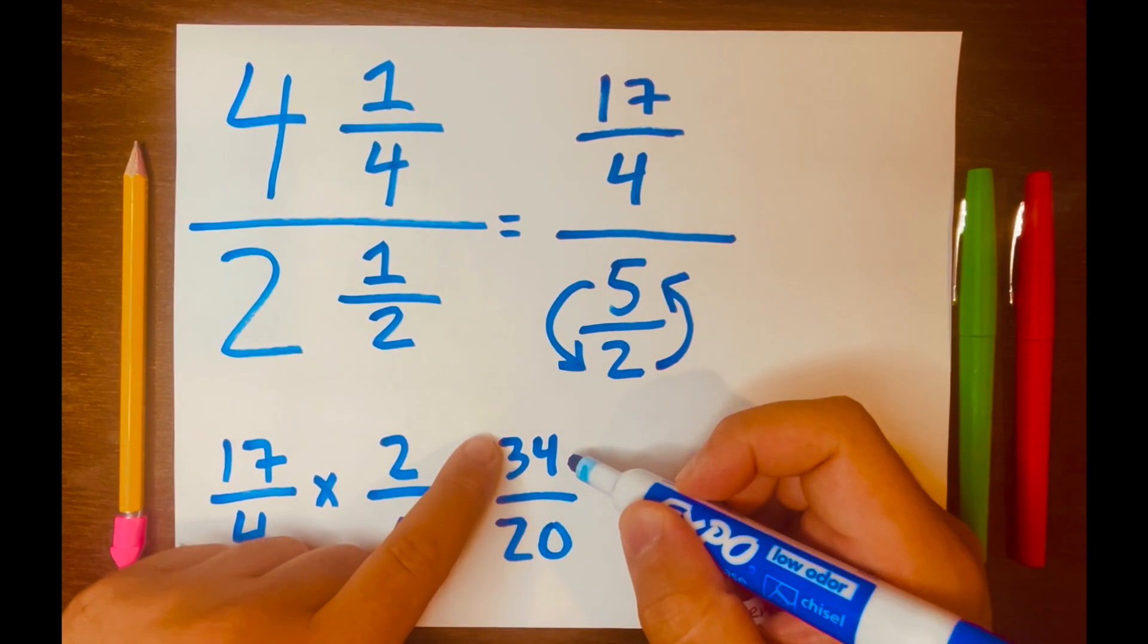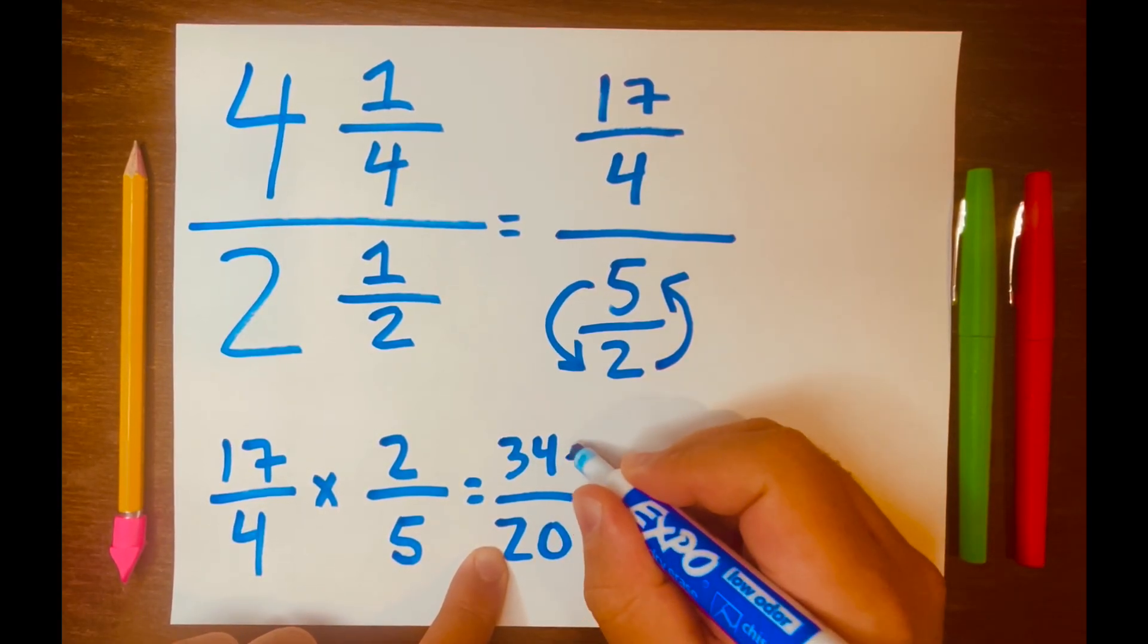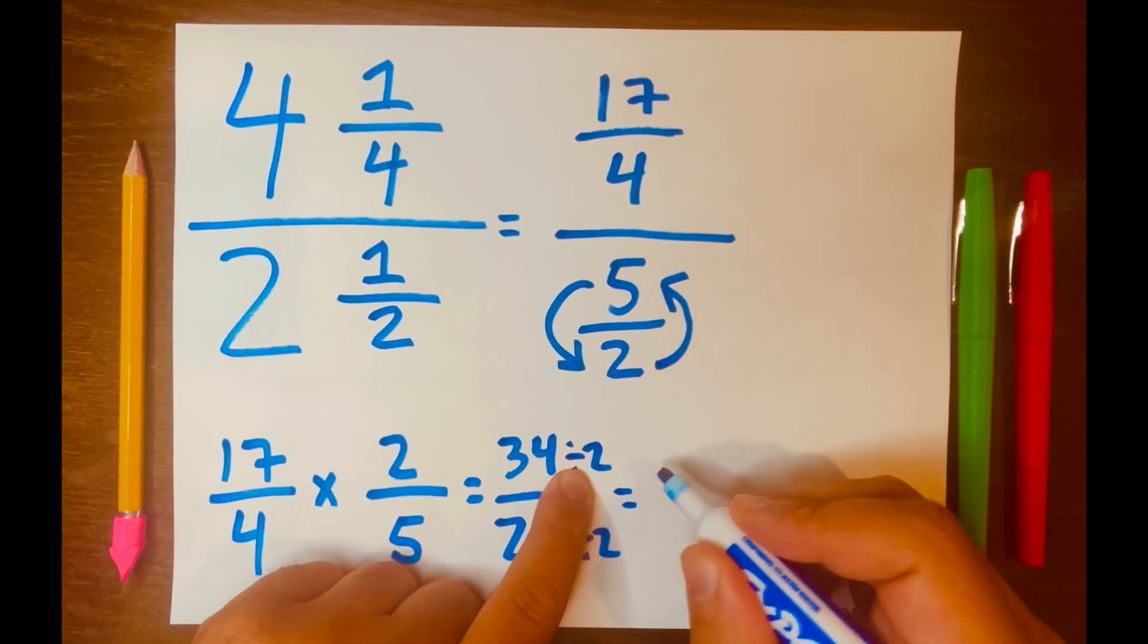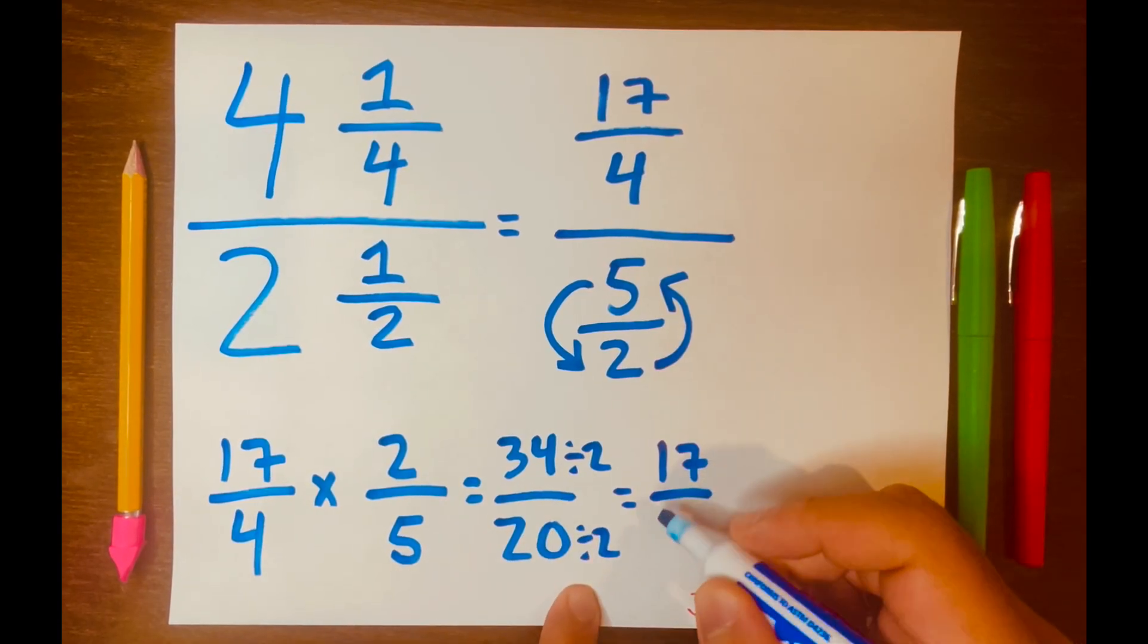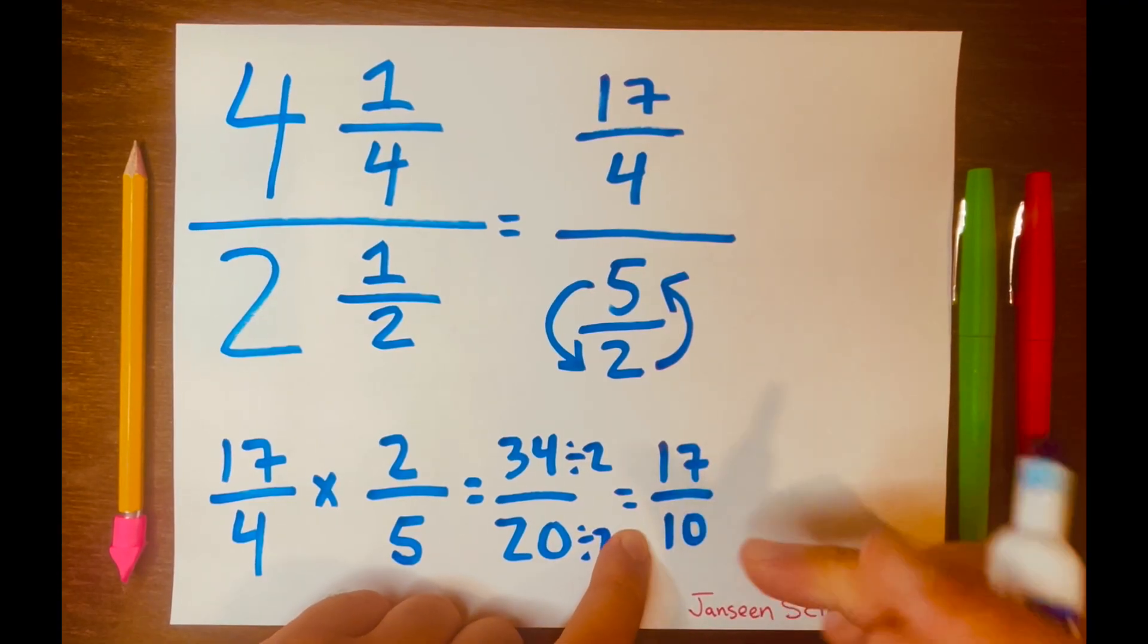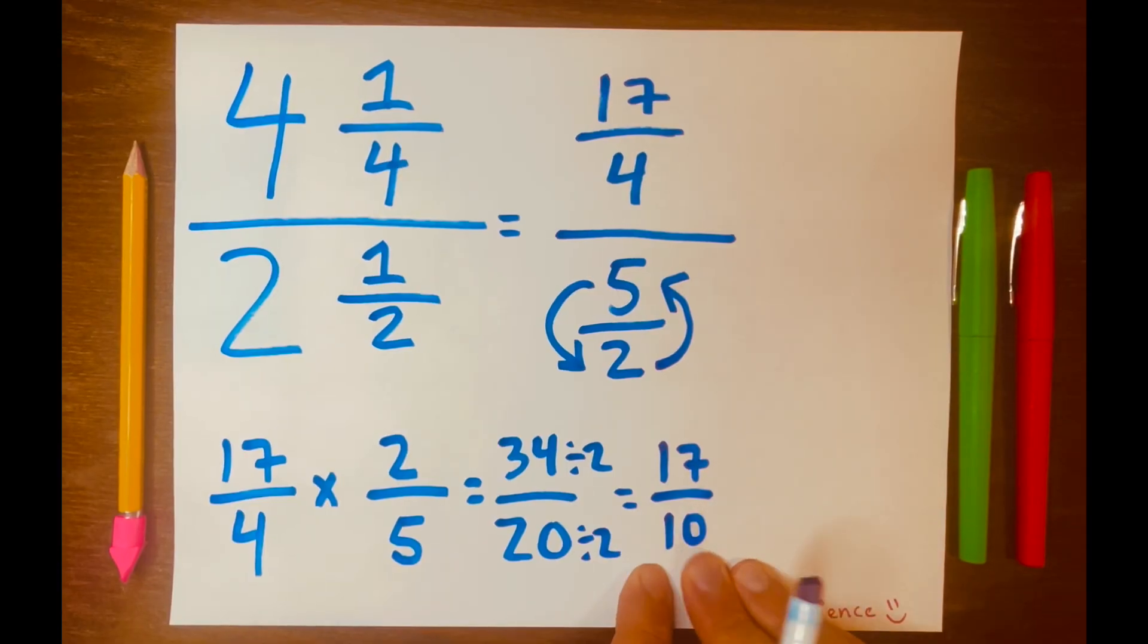So the top number and the bottom numbers are both even numbers, so we can divide by 2. So 34 divided by 2 is 17, and 20 divided by 2 is 10. So we got 17 over 10, and we cannot simplify this further. So that is the answer.